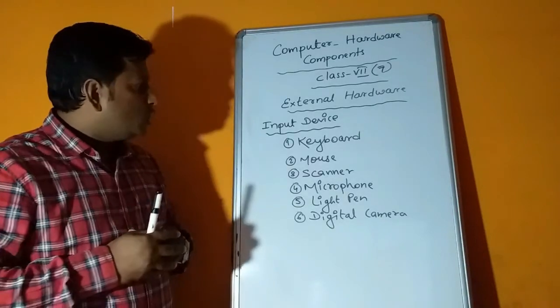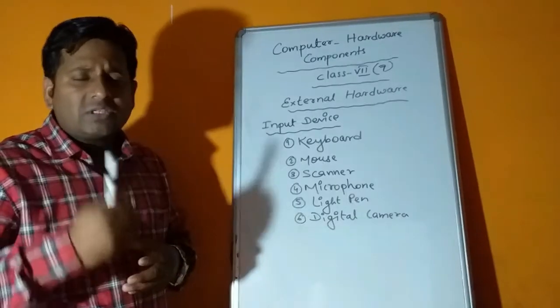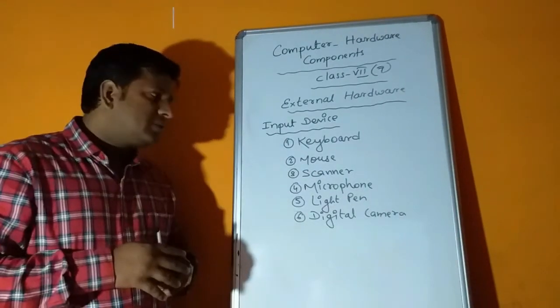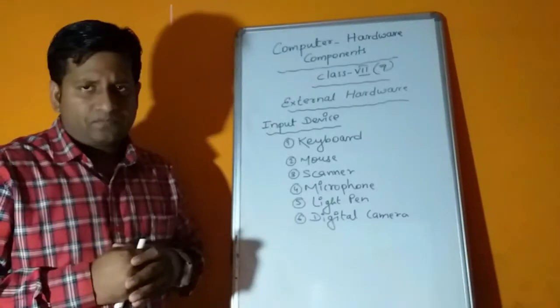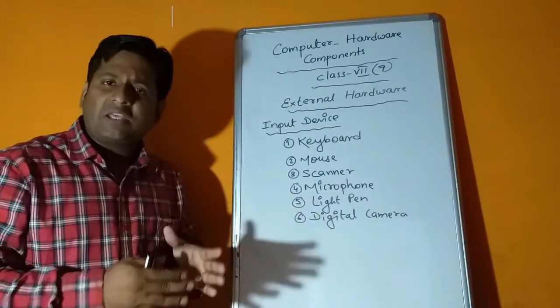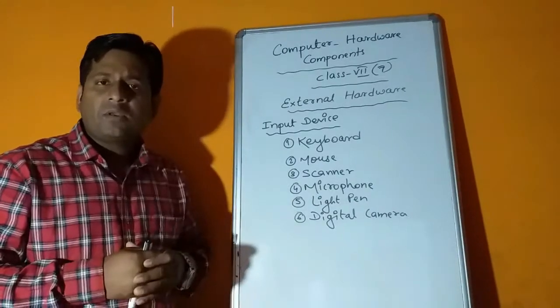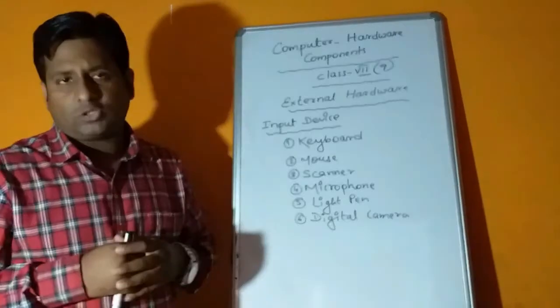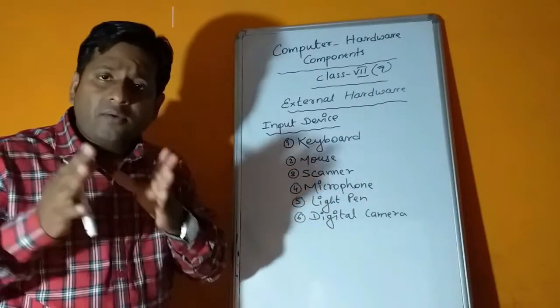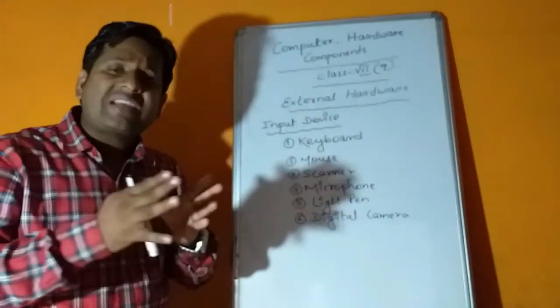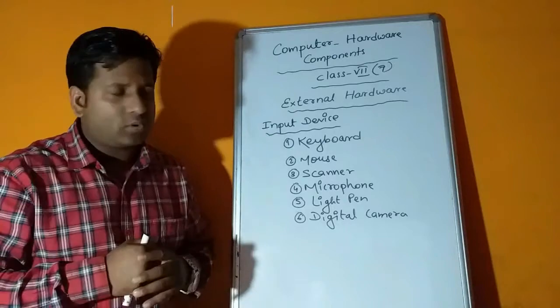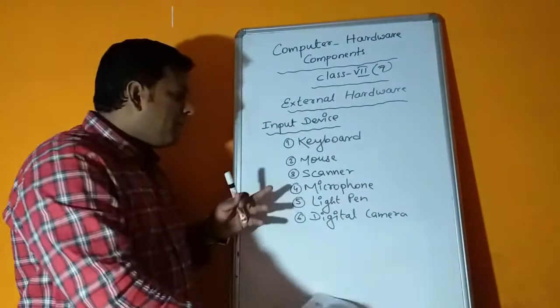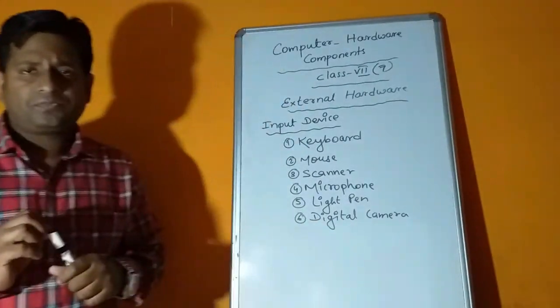Input devices are the devices through which computer gets the data. We send data to the computer through input devices. Some important devices are listed here like keyboard. Keyboards are input devices used for typing. It has multiple keys: alphabet keys, number keys, symbolic keys, function keys, cursor control keys. Basically there are 104 keys on a standard keyboard.